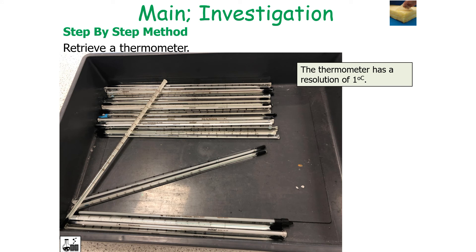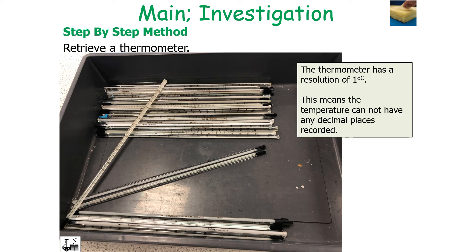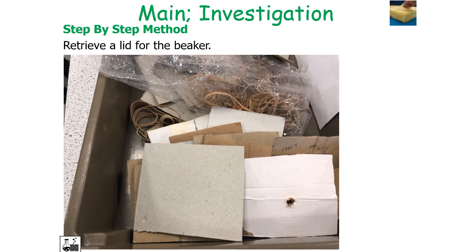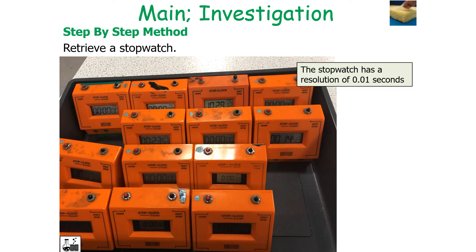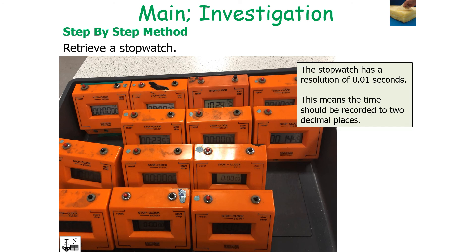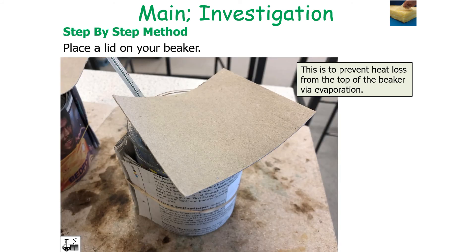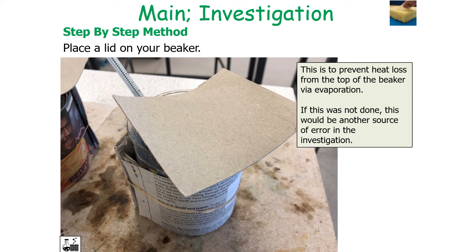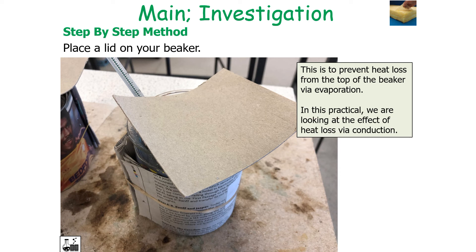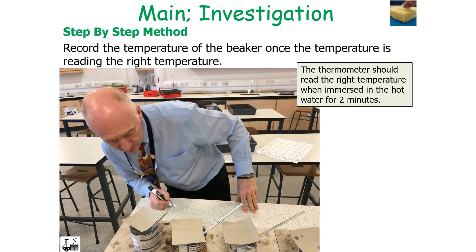Retrieve a thermometer with a resolution of 1°C, so temperature cannot have any decimal places recorded. Retrieve a stopwatch with a resolution of 0.01 seconds, so time should be recorded to two decimal places. Fill the beaker up to 300 ml with hot water from the kettle, then place a lid on top to prevent heat loss from the top via evaporation — otherwise this would be a source of error, since in this practical we're looking at heat loss via conduction, not evaporation. Record the temperature once the thermometer has stabilised, which takes about two minutes after being immersed in the hot water.